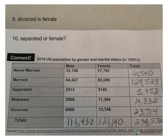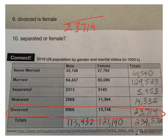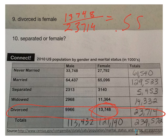Nine and ten — I lied. Nine is actually similar to number five, not ten. Number nine: probability that someone who is divorced is female. So you have somebody who is divorced, meaning your denominator is 23,714. Female is 13,748 on top, and we end up with a decimal answer of .580. If you go back to number five, check out the wording — it's worded a little differently, but they're really asking for the exact same thing.